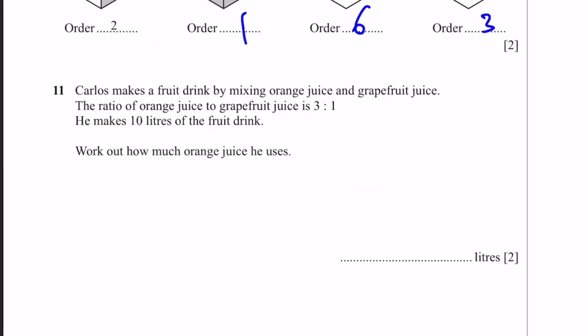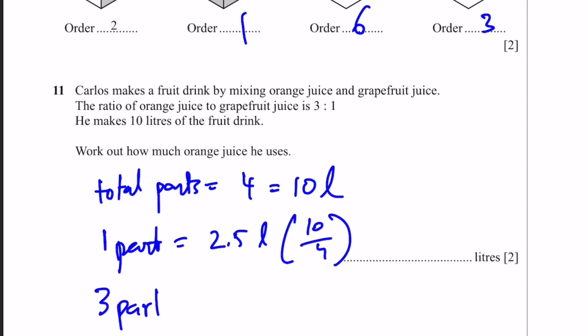Question 11. Carlos makes a fruit drink by mixing orange juice and grapefruit juice. The ratio of orange to grapefruit juice is 3 is to 1. He makes 10 liters of the drink. Work out how much orange juice he uses. Total number of parts equals 3 plus 1, which is 4. These 4 parts are actually 10 liters, so 1 part equals 2.5 liters. And 3 parts for the orange juice is 2.5 into 3, which equals 7.5 liters. That's the answer.